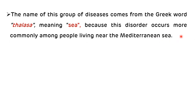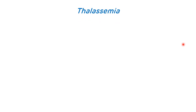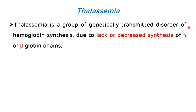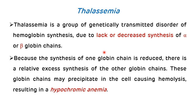The term thalassemia is derived from the Greek word 'thalessa' which means sea, because this disorder occurs more commonly among people living near the Mediterranean Sea. Thalassemia is a group of genetically transmitted disorders of hemoglobin synthesis which occurs due to the lack or decreased synthesis of alpha or beta globin chains of hemoglobin.